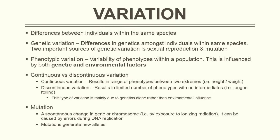There are two forms: continuous and discontinuous variation. Continuous variation results in a range of phenotypes that lie between two extremes — for example, height. You can be tall or short, and there's a wide spectrum in between. Discontinuous variation is more like a black and white yes or no answer, resulting in a limited number of phenotypes with absolutely no intermediates — for example, tongue rolling. This type of variation is quite often mainly due to genetics alone rather than environmental influence.